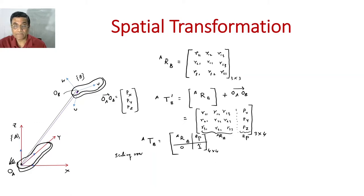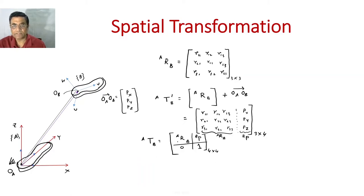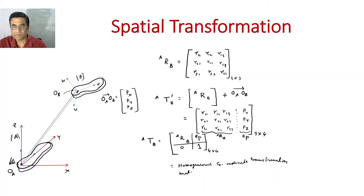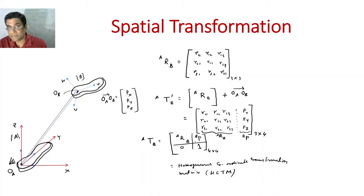In graphics instead of 1 they normally put some value which is the magnification factor — if more than 1 the image is magnified. But in robotics it will always be 0, 0, 0, 1. This is called the Homogeneous Coordinate Transformation Matrix, or HCTM — a very important and popular matrix. It is now capturing both the orientation of a rigid body together with its translation.